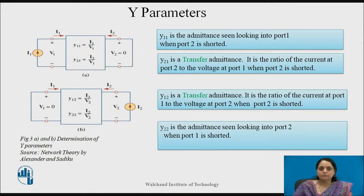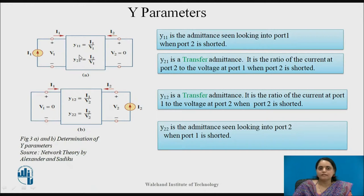Let us look in detail at what these four Y parameters are. In Figure 3a, port voltage V2 is made equal to zero, which indicates that port 2 has been short-circuited. By short-circuiting the second port, we can calculate Y11 and Y21. Y11 is the admittance looking into port 1 when port 2 is short-circuited.